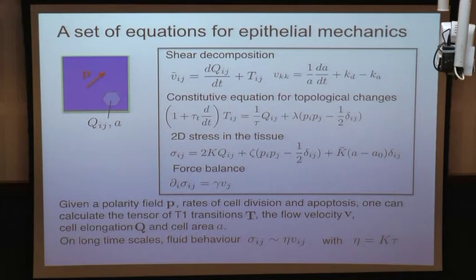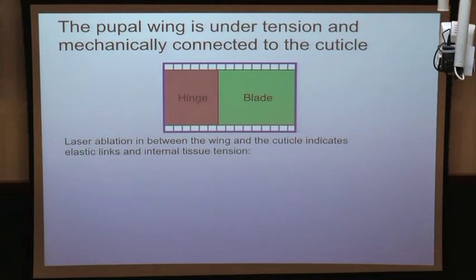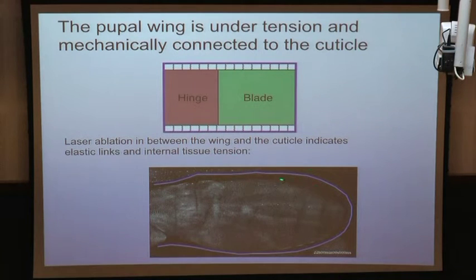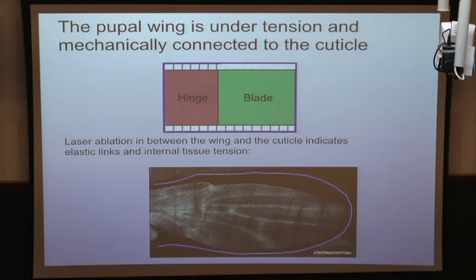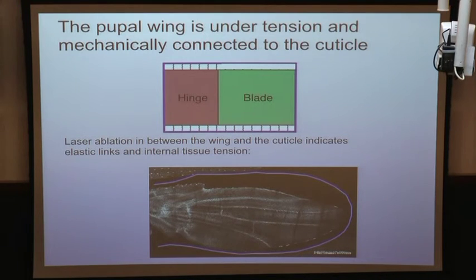To solve the model, we need boundary conditions and external forces. To our surprise, the tissue is not free — it is connected by elastic links to an external frame. A laser ablation experiment shows: with the cuticle (a solid shell) visible around the tissue, performing ablation causes the wing to retract away from the cuticle, showing the wing is under tension sustained by elastic links connecting it to the external material.